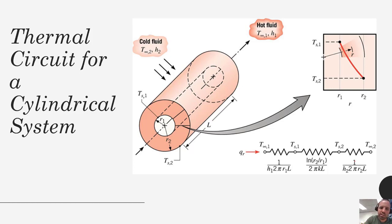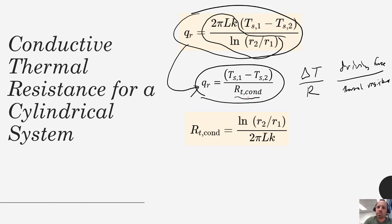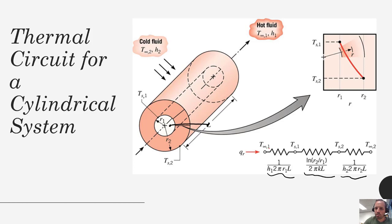We can build a thermal circuit with the inner convective resistance, the conductive resistance through the cylindrical wall, and the outer convective resistance in series. We quantify the total flow of heat from inside to outside by summing those three thermal resistances. If we know the heat transfer coefficients and the conductive thermal resistance, we can lump everything together. We can also equate the thermal resistances to back-solve for T_s1 or T_s2 as needed.